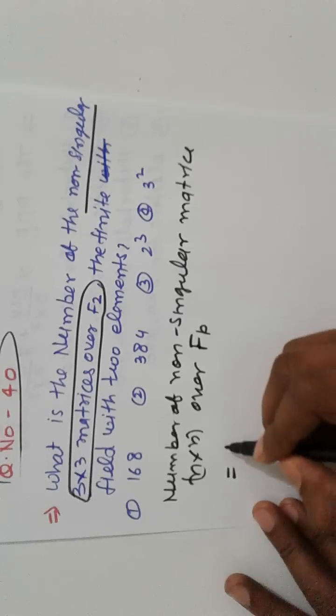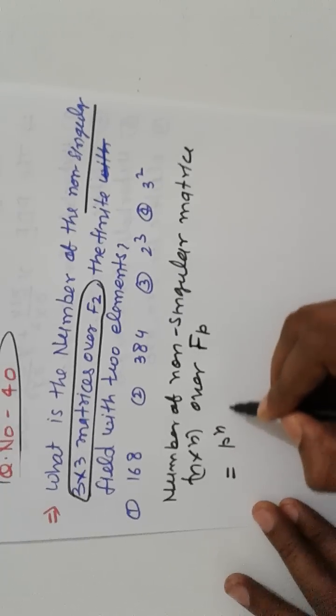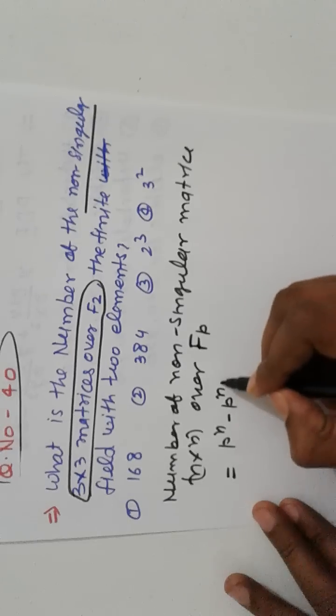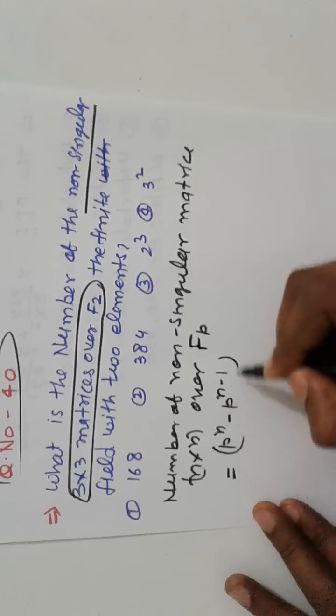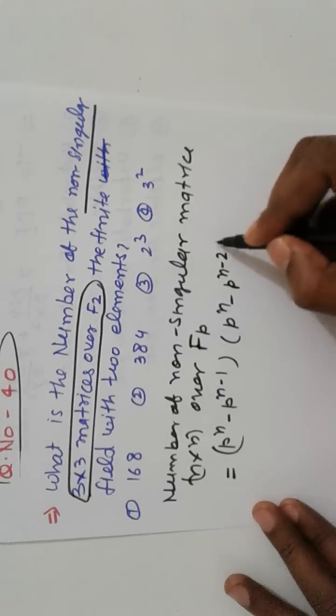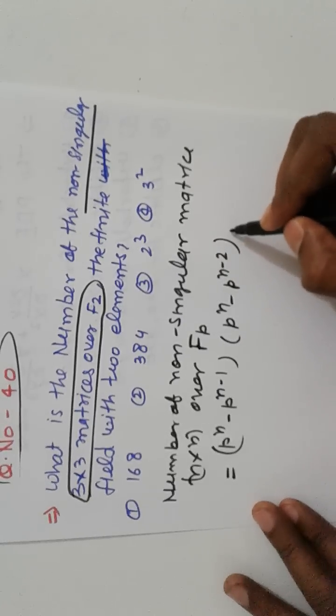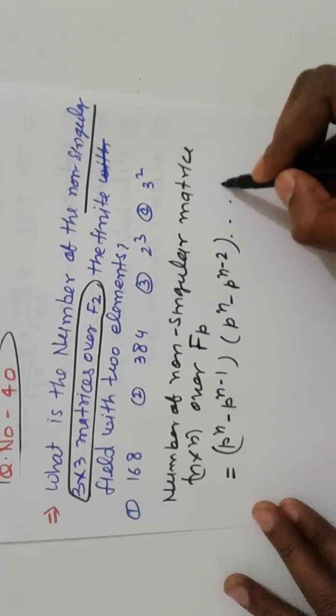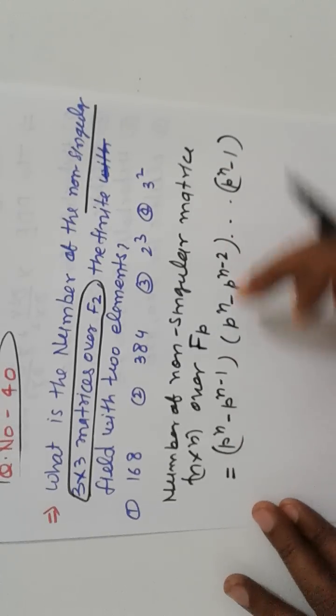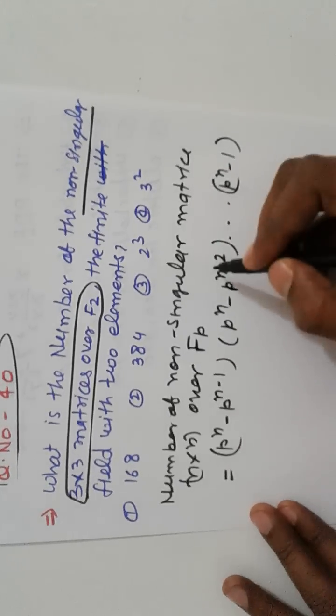So over F of p is equal to, that is here, equal to p raised to n minus p raised to n minus 1. Here p raised to n minus p raised to n minus 2 and similarly p raised to n minus 1. This is process of finding your formula.